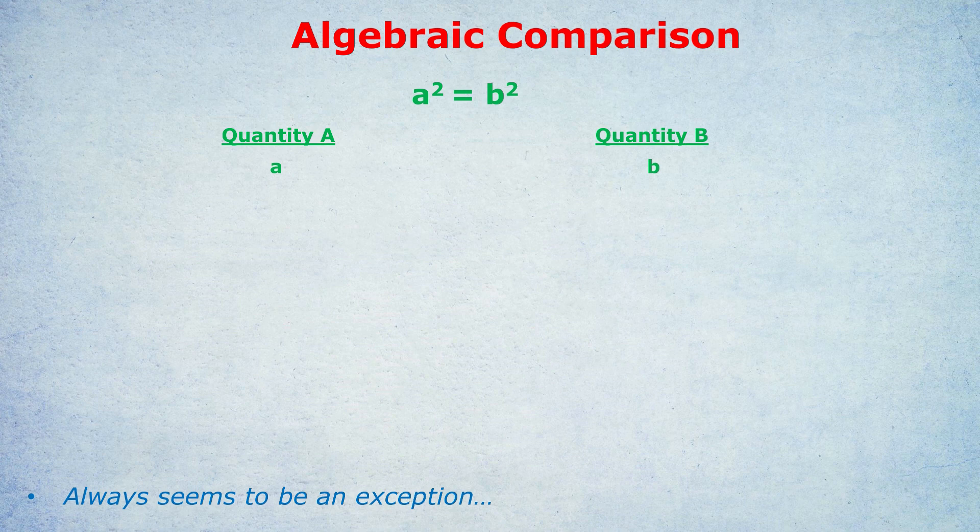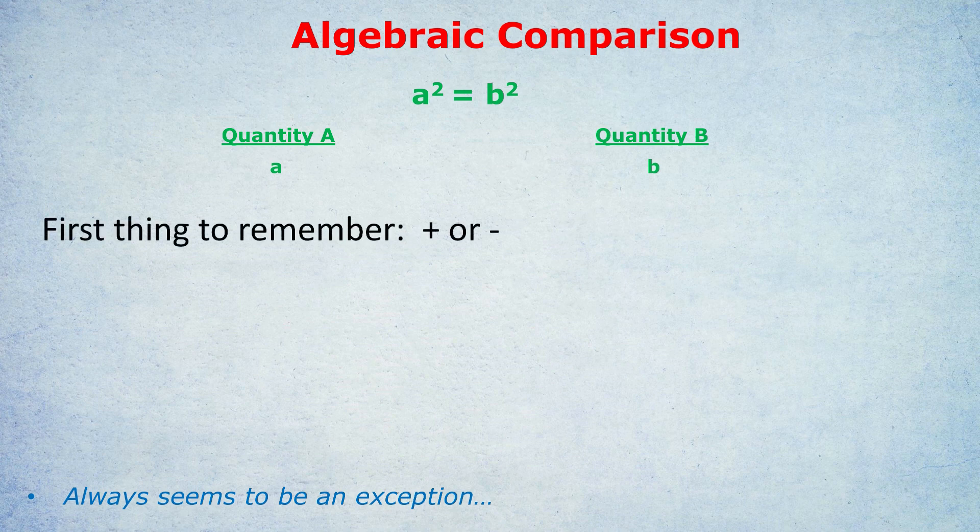Some students will fall into the trap and say A equals B — if we simply square root both sides, you get A equals B and therefore the answer is C, both quantities are equal. But that is a vintage GRE and GMAT trick. We can't say that, because there are even powers — squared, or power of four, power of six — we don't know the sign, positive or negative, of A and B. The first thing to think of is positives and negatives.